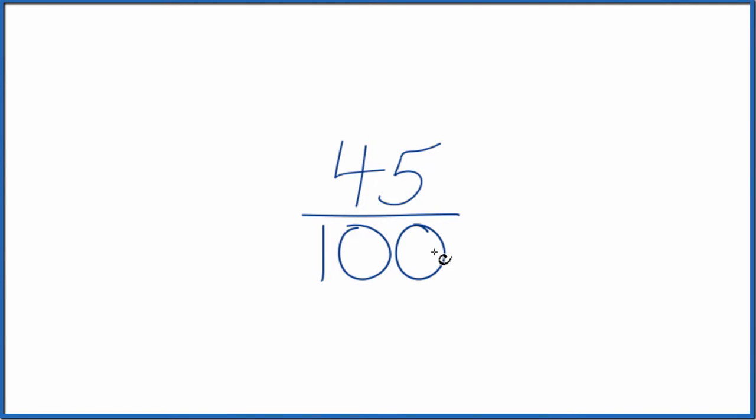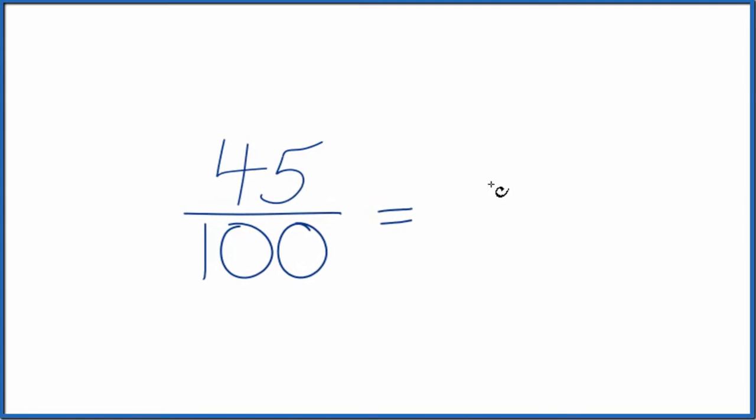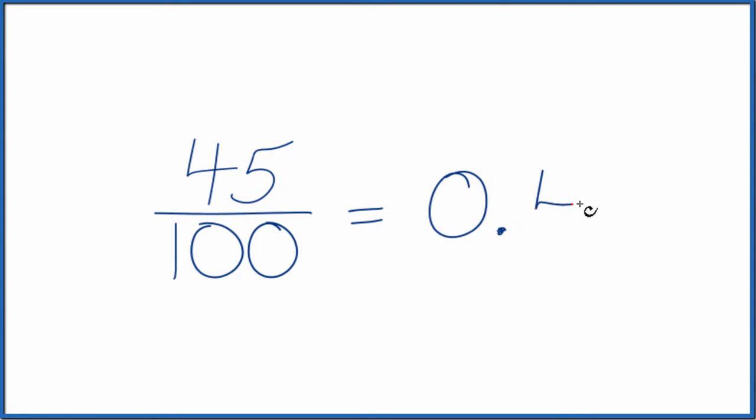First, we could just divide 45 by 100 on our calculator, or we could divide it in longhand. We'll end up with 0.45. That's our decimal. So the fraction 45 hundredths, that's equal to the decimal 0.45.